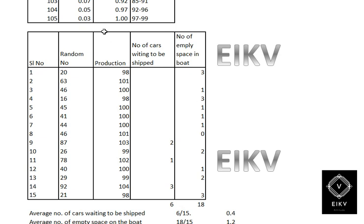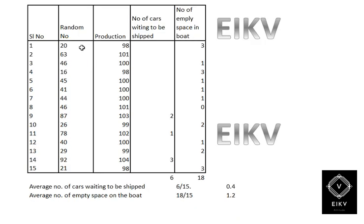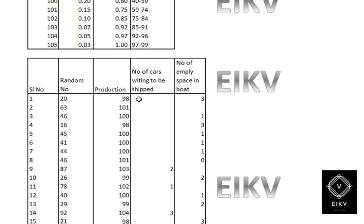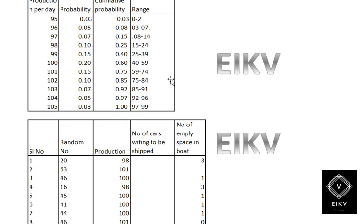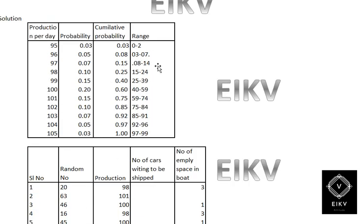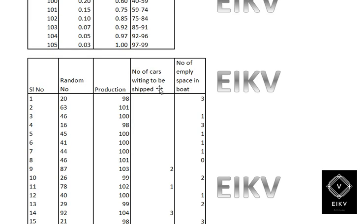Now we apply the random numbers. Serial numbers run from 1 to 15. Random number 20 falls in the fourth category (range 15–24), so production on day 1 is 98 cars. Random number 63 falls between 60 and 74, so production on day 2 is 101 cars. Random number 46 falls in range 40–59, so production on day 3 is 100 cars.